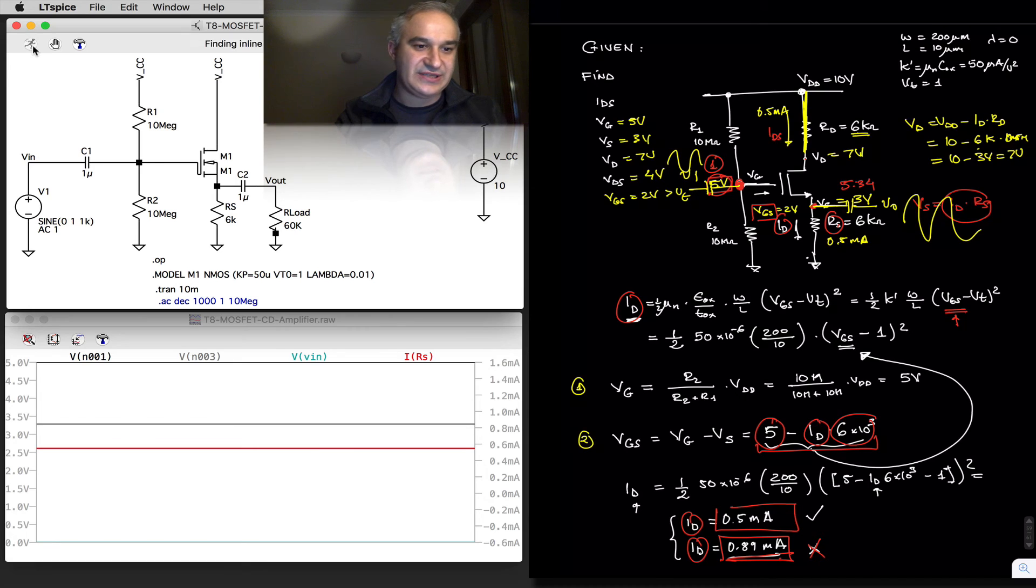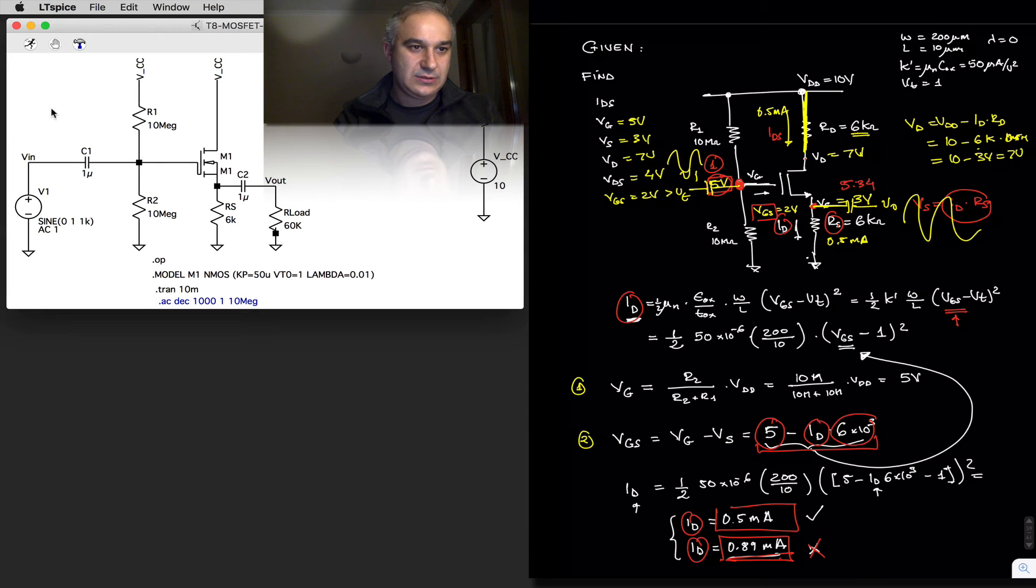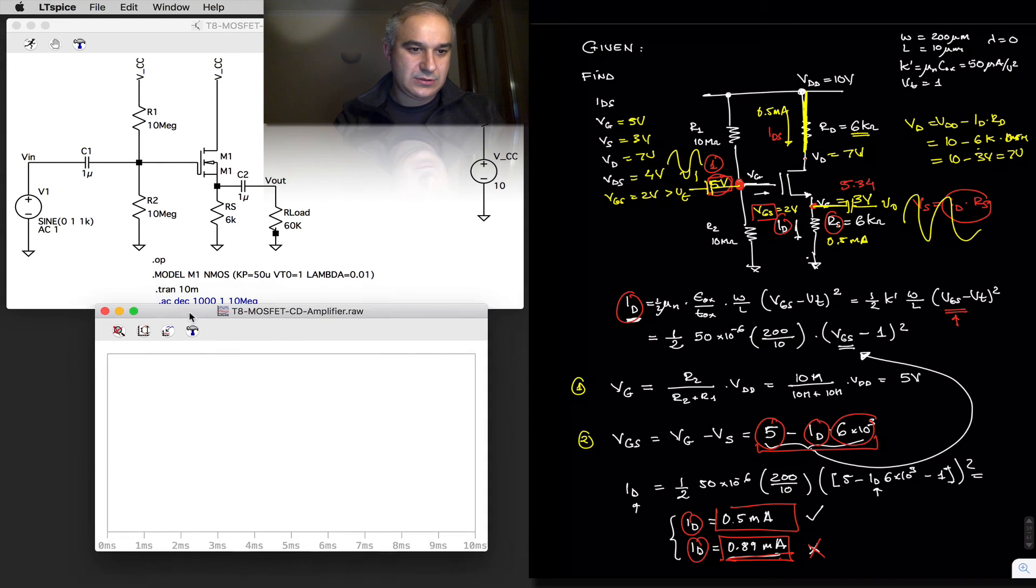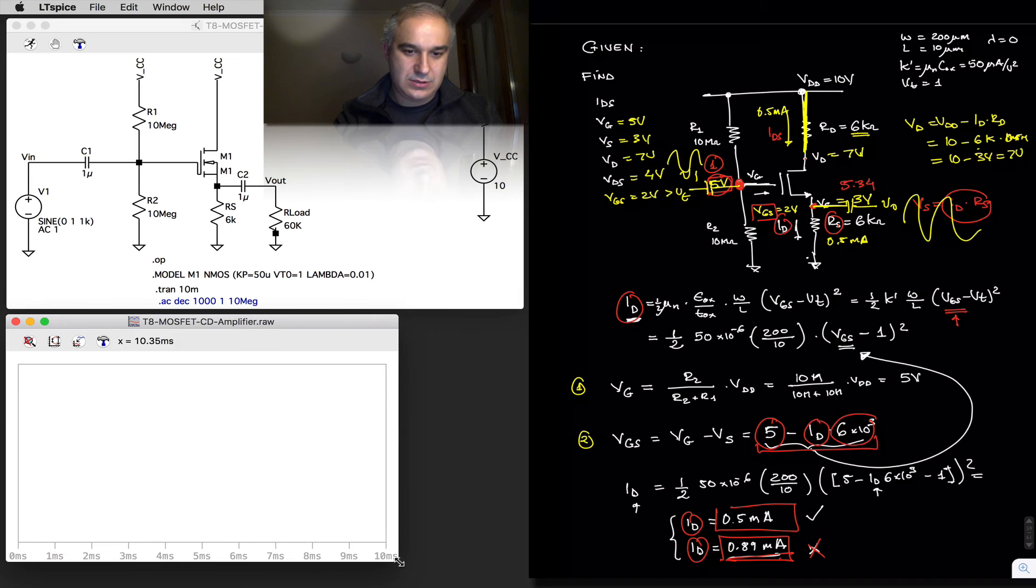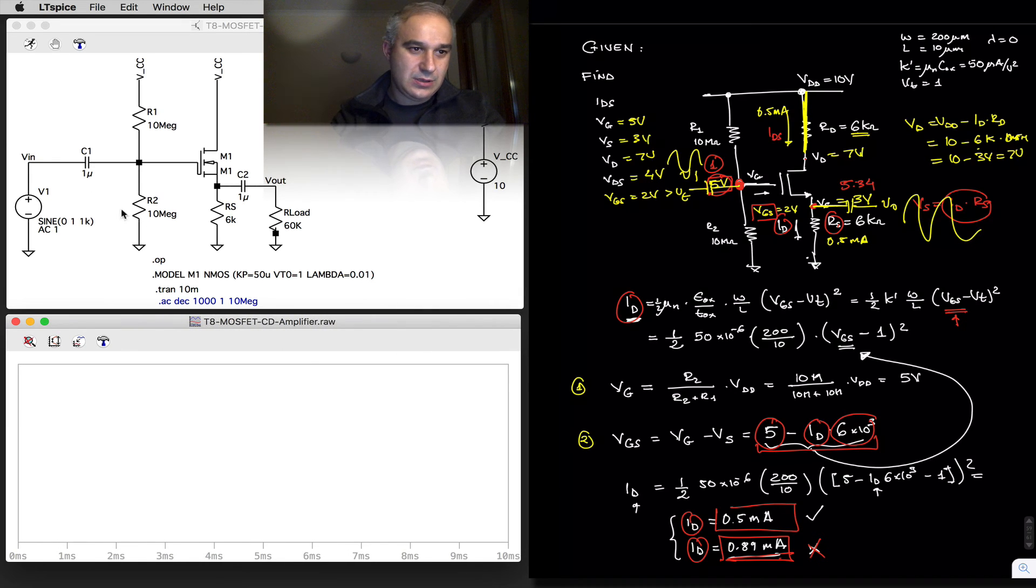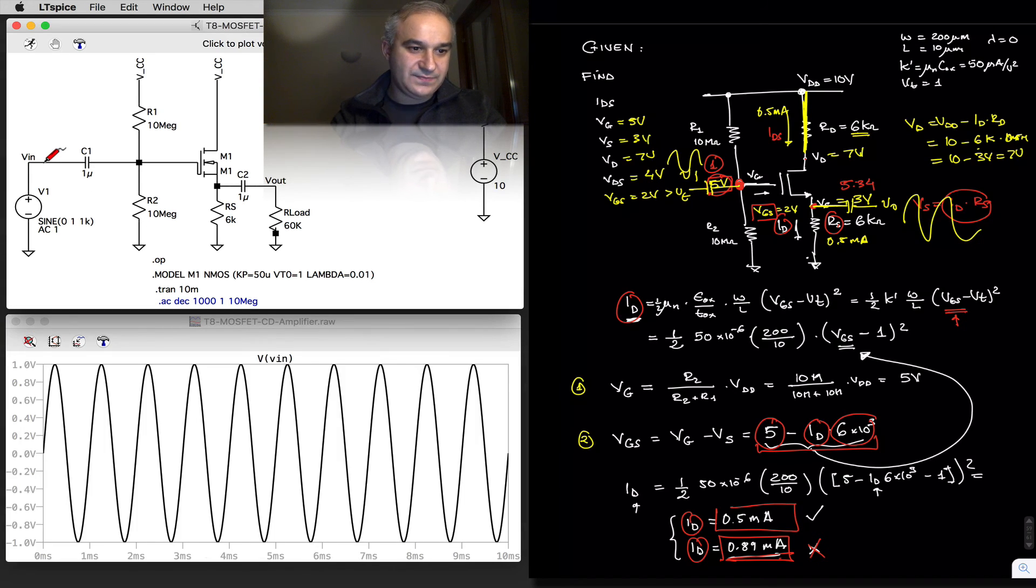Oops, let's run the transient analysis. So we have an input of 1 volt, and our output is slightly less than 1 volt.